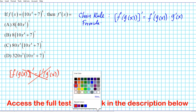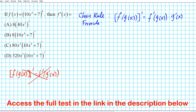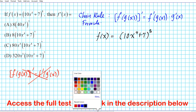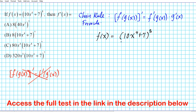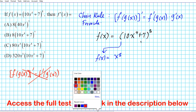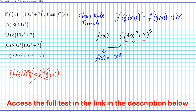To avoid that mistake, let's use the following procedure to find the derivative of this composite function: 10x to the 4th plus 7, raised to the 8th power. First, we decompose it into the outer and inner function. The outer function — let's call it f of x — is x to the 8th power. The inner function — let's call it g of x — is 10x to the 4th plus 7.